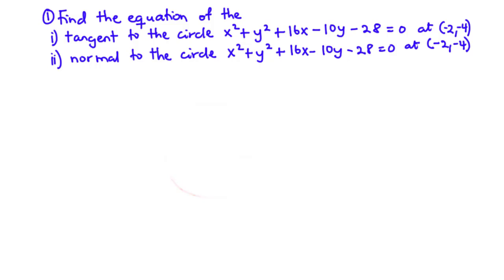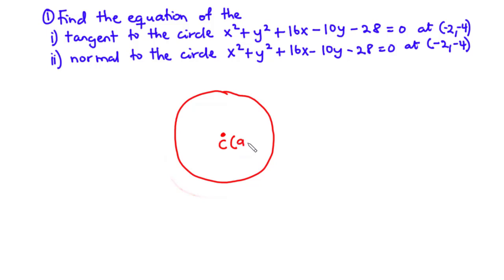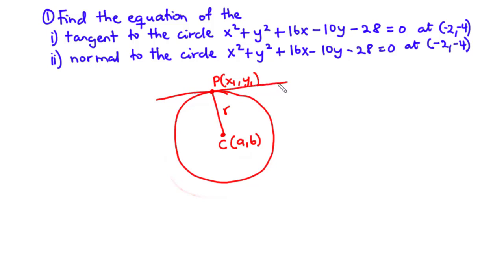We are going to focus on how to find the equation of a tangent and normal to a circle. Let's consider a circle which has center C with coordinates (a, b), and assuming that we have a point P with coordinates (x1, y1) on the circumference of the circle. The distance between the point P and C is what we call the radius, represented with the letter R. The tangent to the circle at any given point, say P, is the straight line that just touches the circle at that point. This is called the tangent or the tangent line.